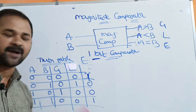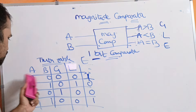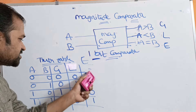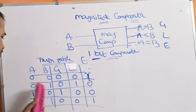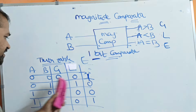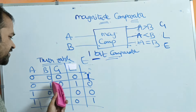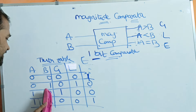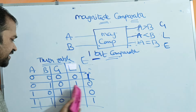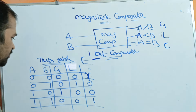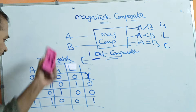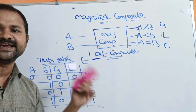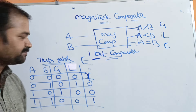Now we have to evaluate the expressions for G, L, and E. If you observe the G column, we have only one 1, at combination 1-0. So G equals A·B̄. If we observe the L column, we have only one 1 at combination 0-1, so L equals Ā·B.